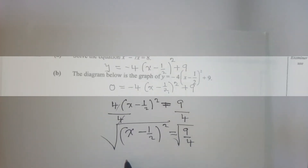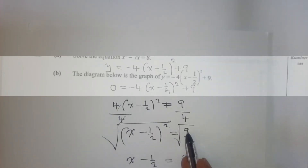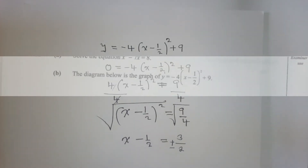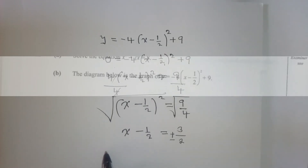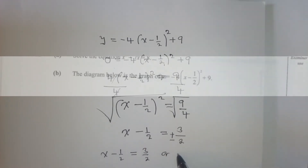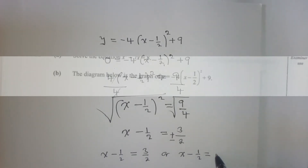Taking the square root: x minus one over two equals the square root of nine over four, which is three over two. There are two answers — positive three over two and negative three over two. So we solve two equations: x minus one over two equals three over two, or x minus one over two equals negative three over two.